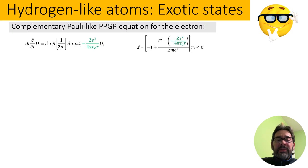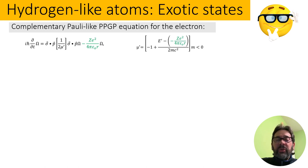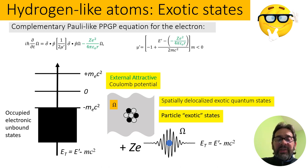Hydrogen-like atoms — exotic states. In this case, if we want to find the wave function corresponding to the exotic state, we should solve the complementary Poveda-Poriere-Gravide Peralta equation for the electron, where mu prime is the effective relativistic mass of the electron in the exotic state. Mu prime is negative. For this reason, the spectrum of energy of the exotic state of the electron in the hydrogen-like atom is continuous, and the corresponding wave function is spatially delocalized.